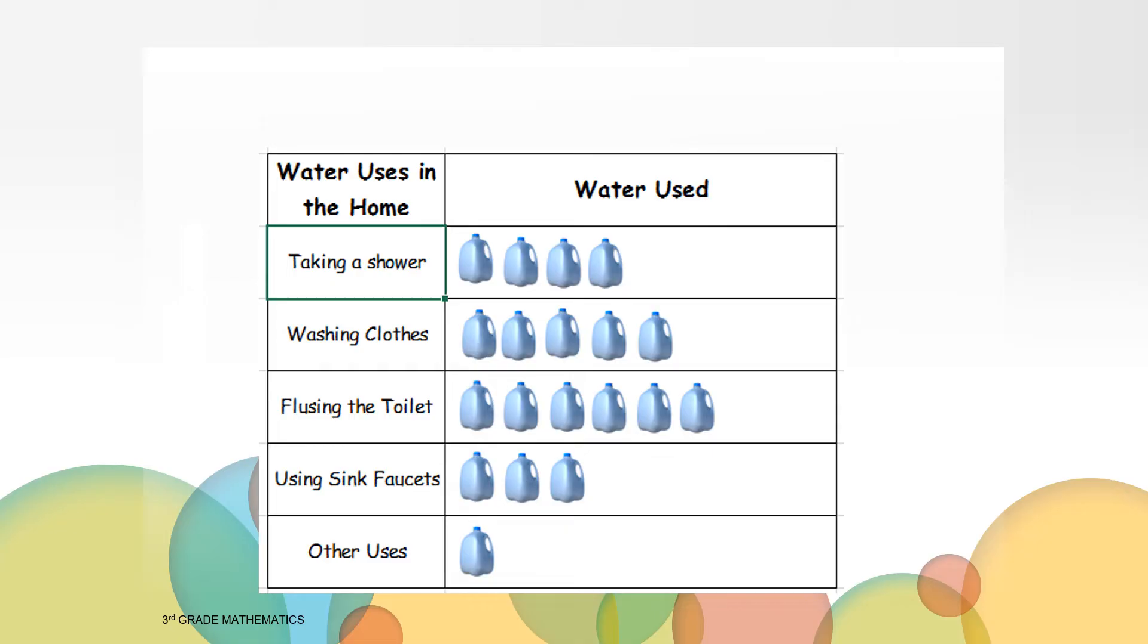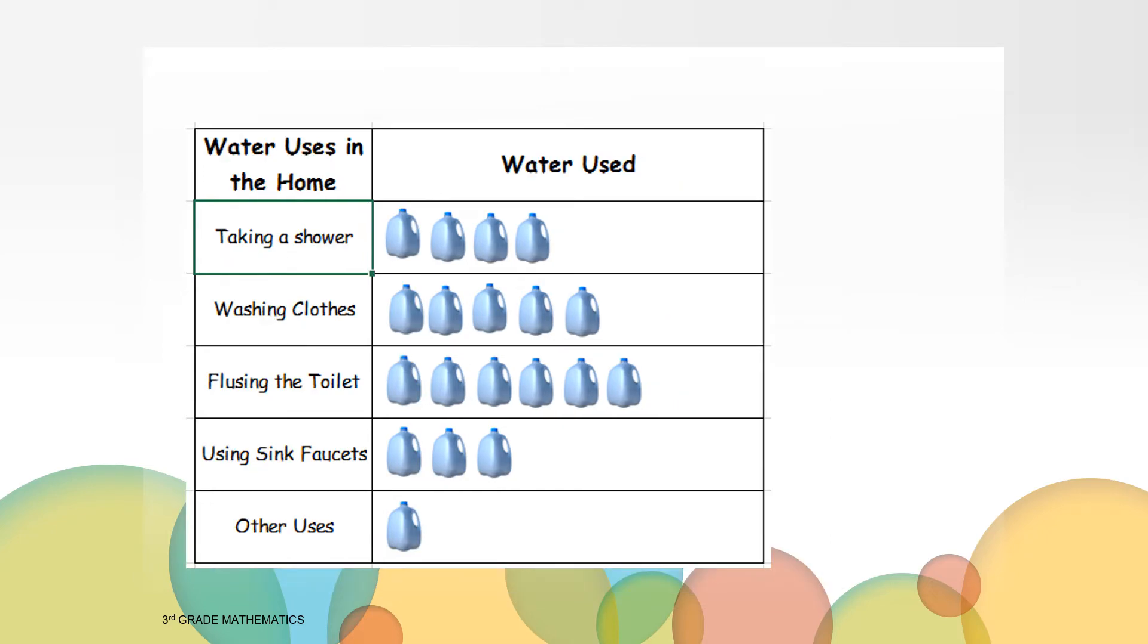What is still missing in our pictograph? Hint, there are two things still missing. See if you can find them. Looking at our pictograph, do we know what each picture represents? No, not yet, so we need a key to give us that information.